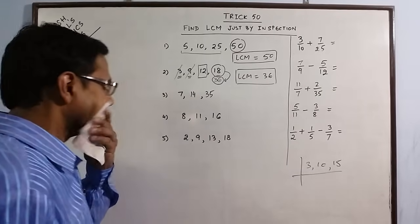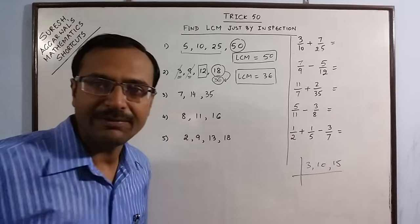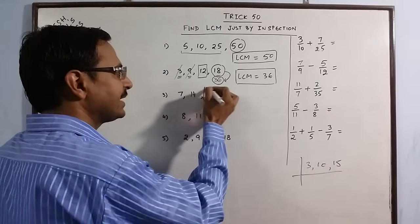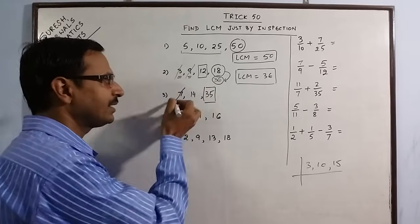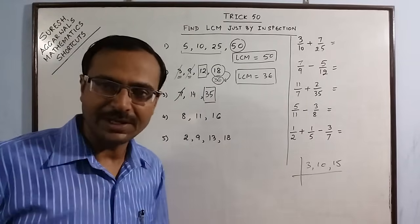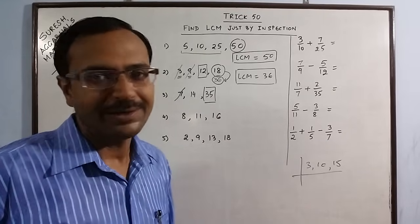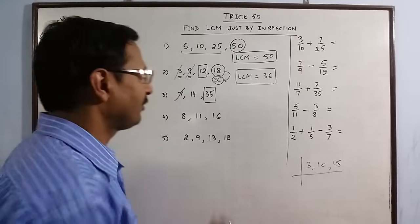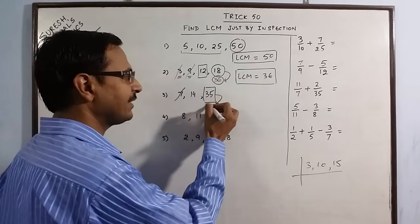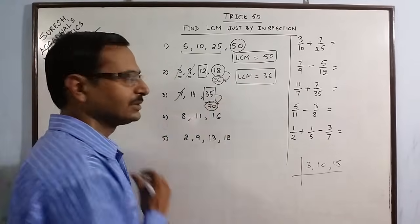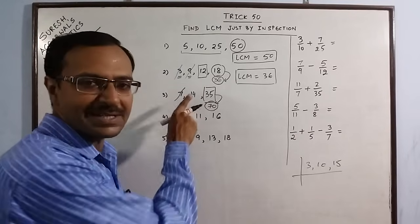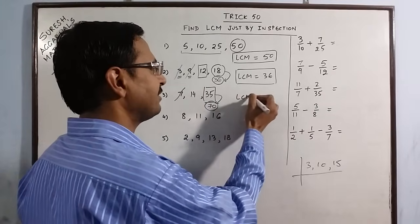See another case. Now we have 7, 14 and 35. 35 is the highest number. So we cancel out 7 but 14 does not divide 35. So we write the next multiple of 35 which is 70. Now 14 fives are 70. 14 is the divisor of 70. So LCM is 70.